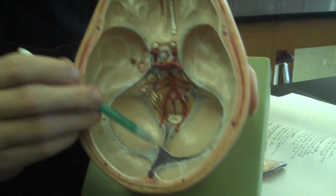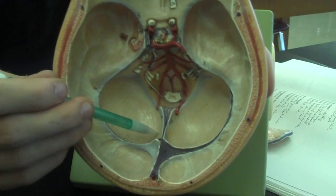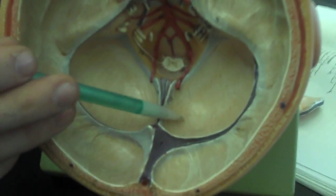The next thing we have is the Falx cerebelli. The Falx cerebelli is this small ridge down here within the skull.